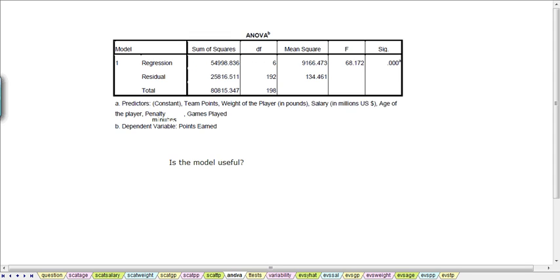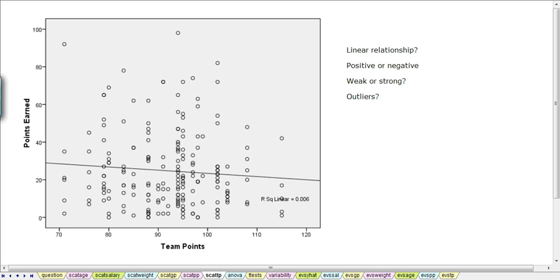We want to know if this is a useful model. So is this model useful? Well, when we looked at the scatter plots, and we'll look at the points scatter plot, the team points scatter plot plotted against the points earned by the player, we saw that there was a very low R squared for this particular independent variable.